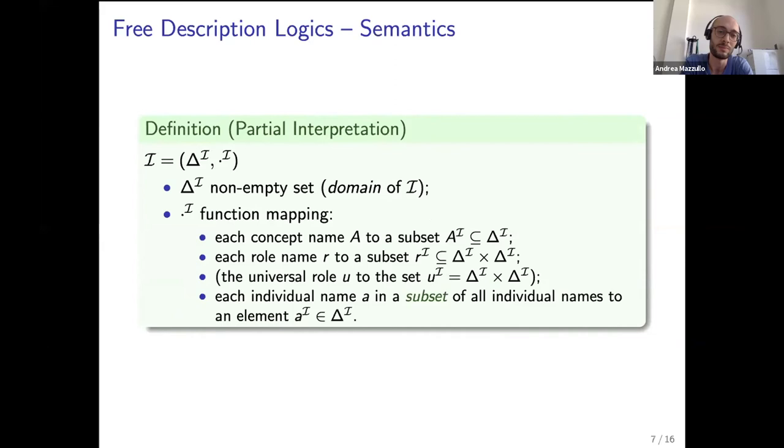The semantics is based on the notion of partial interpretation that generalizes the standard notion of interpretation. Concept names and role names are total as usual, but it's partial on the set of individual names, meaning that only individual names in a certain subset are mapped to elements of the domain.